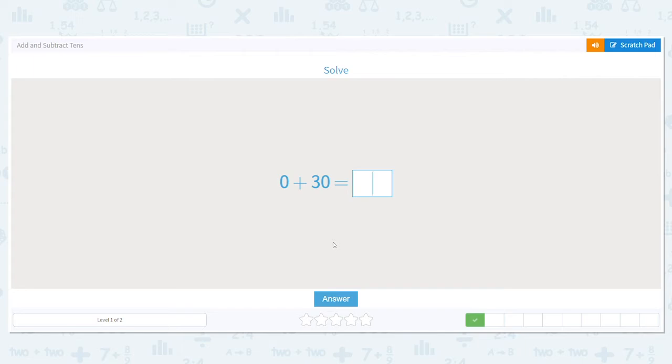Now I have 0 plus 30. Any number plus 0 equals that original number. So what does that equal? 30.